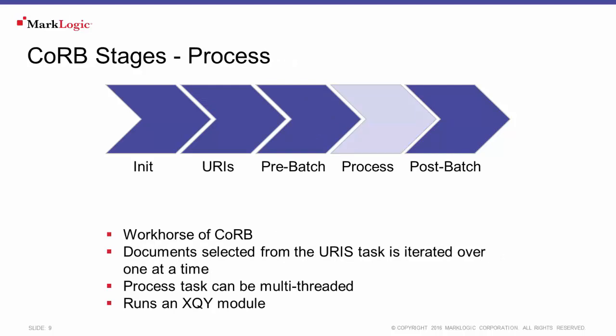The main workhorse of the CORB tool is the process stage. At this stage, the documents that were listed in the URI stage are iterated over one at a time for processing. This processing could be modifying the documents or generating content for a report. The process step can be multi-threaded if desired and will run an XQuery module.